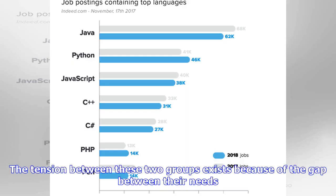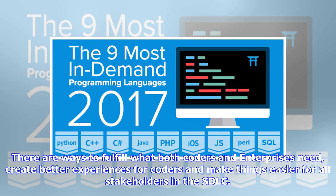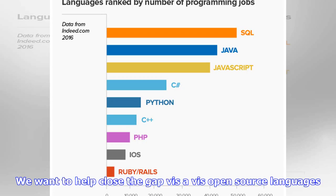The tension between these two groups exists because of the gap between their needs. There are ways to fulfill what both coders and enterprises need, create better experiences for coders and make things easier for all stakeholders in the SDLC. We want to help close the gap vis-a-vis open source languages.